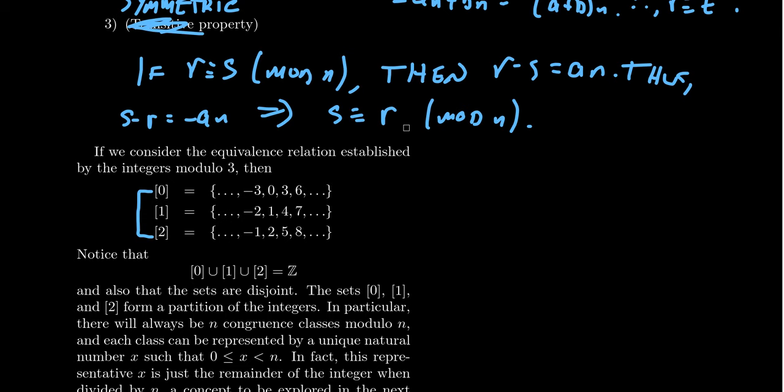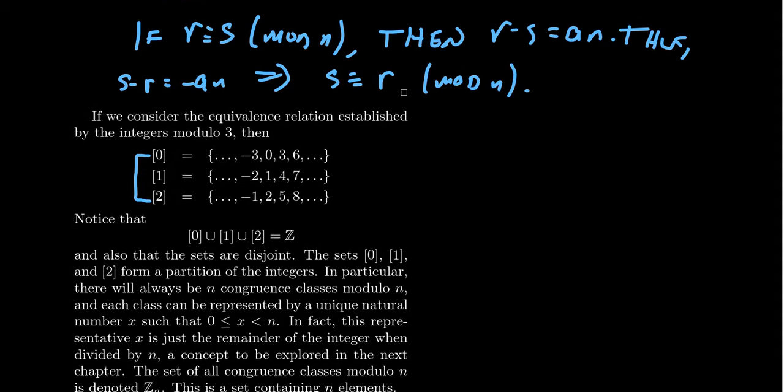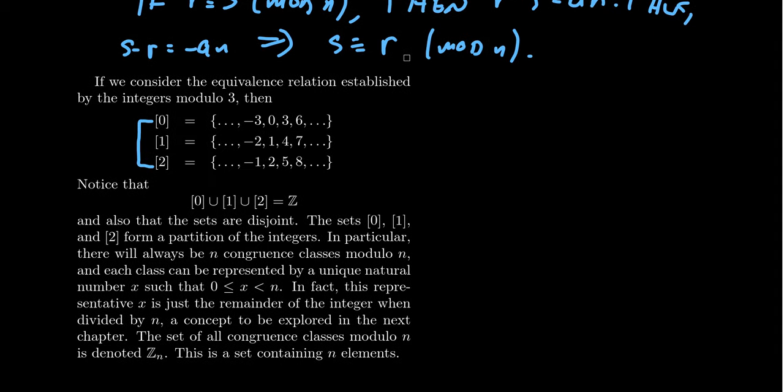And every number, every integer, if you divide by 3, has to be congruent to one of those three by the division algorithm. We'll talk about that a little bit more in the next chapter. This equivalence relationship is very important as we talk about integers and divisibility in the upcoming chapter. Like we proved previously, equivalence relationships always give us a partition.